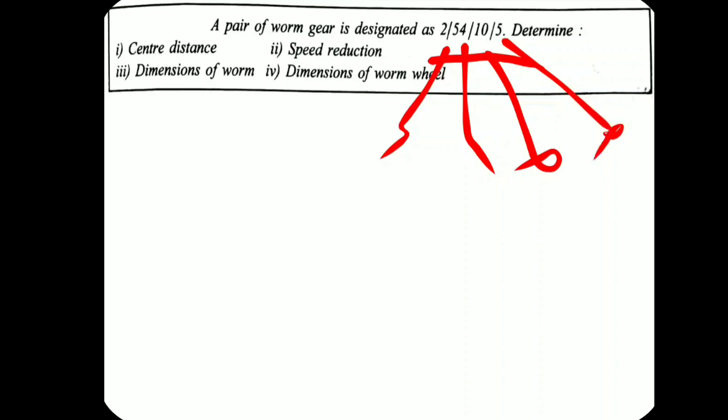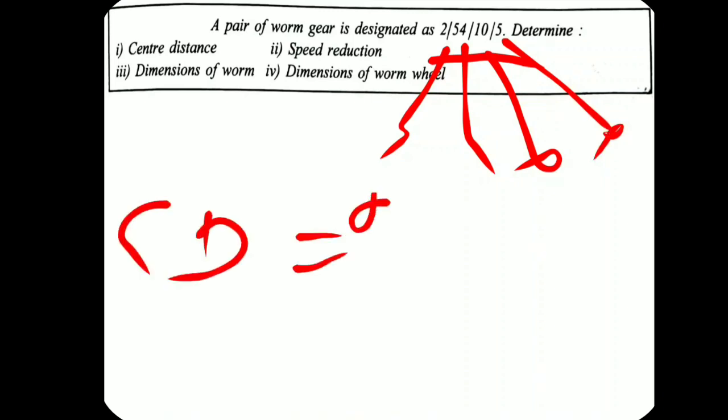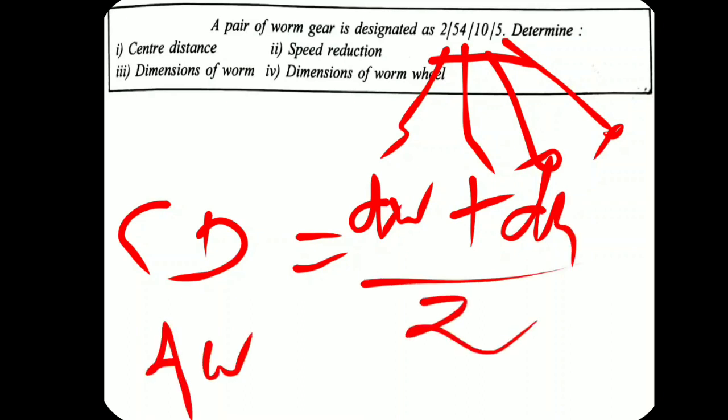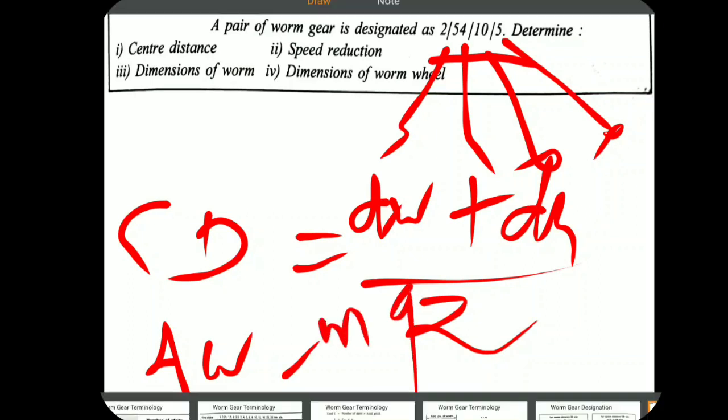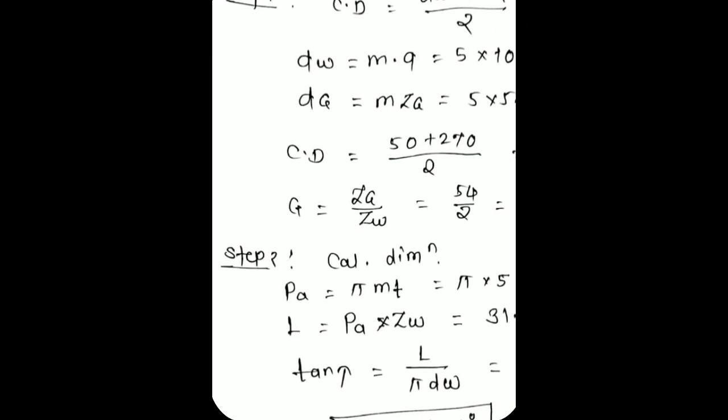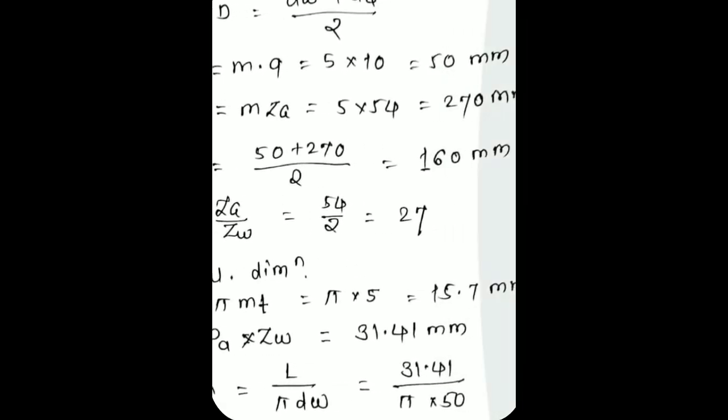First, they have asked for center distance. Center distance = (dw + dg) / 2. Now dw = m × q = 5 × 10 = 50 mm. And dg = m × zg = 5 × 54 = 270 mm. Therefore center distance = (50 + 270) / 2 = 160 mm. That covers the first part.